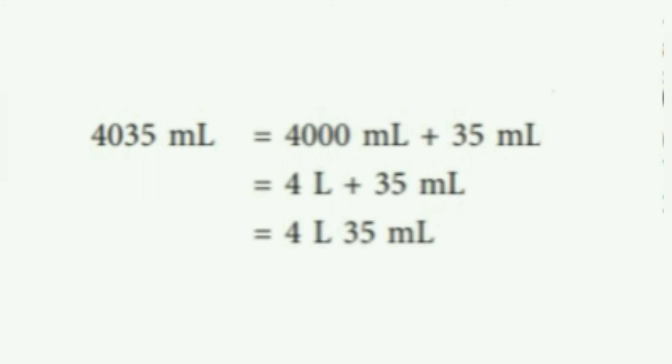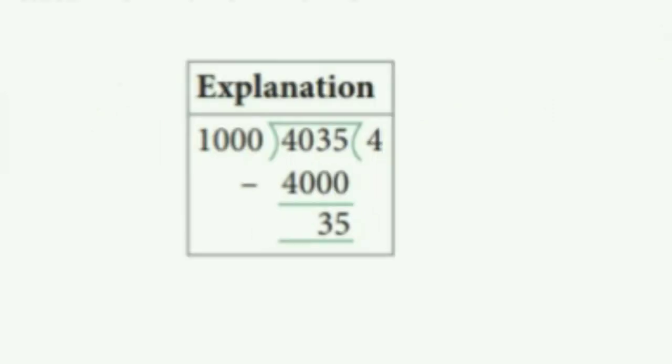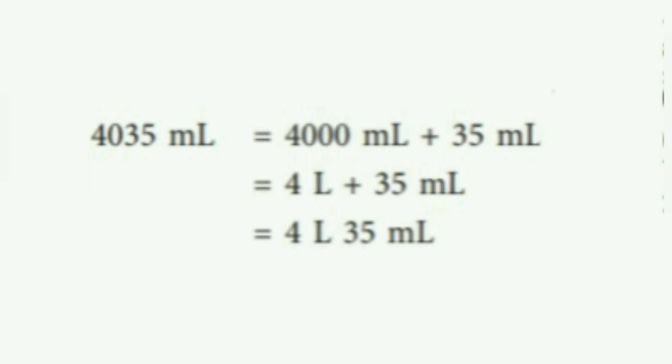Here we have 4035 milliliters. This we have to express into liters and milliliters. To convert it into liters, we have to divide the number by 1000. Let's do it. 4035 minus 4000 equals 35. So here we got 4 liters and 35 milliliters. 4000 milliliters plus 35 milliliters equals 4 liters plus 35 milliliters.